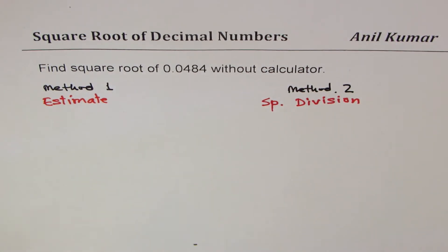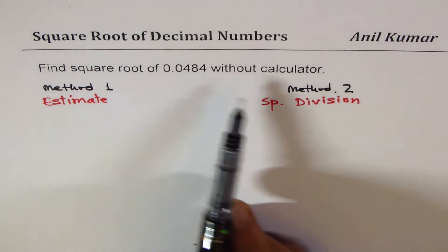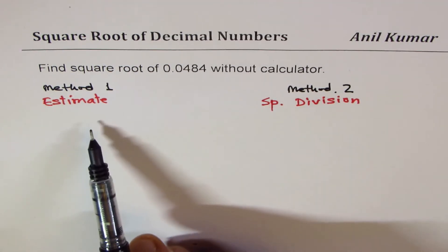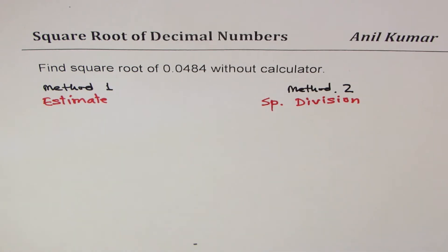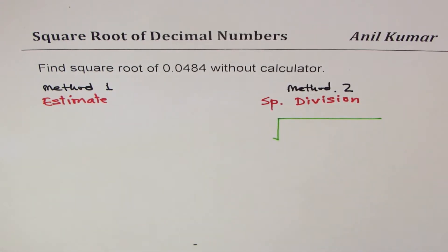Let's begin with special division so that when we have an exact answer we can actually estimate better. We are doing Method 2 first, special division.